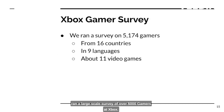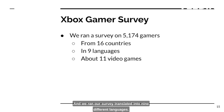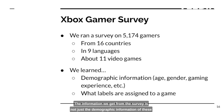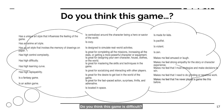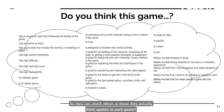To do this, we ran a large-scale survey of over 5,000 gamers at Xbox. Specifically, we recruited individuals from 16 countries, and we ran our survey translated into 9 different languages. We asked questions about 11 video games, of which respondents could select the subset they had played. The information we get from the survey is not just demographic information, but how individuals would assign different labels to each game — things like: do you think this game is cozy? Do you think this game is made for kids? Do you think this game is difficult?